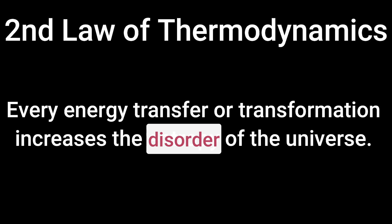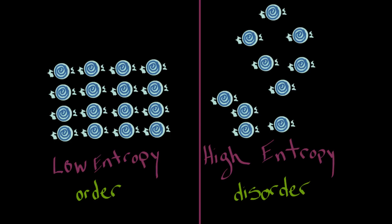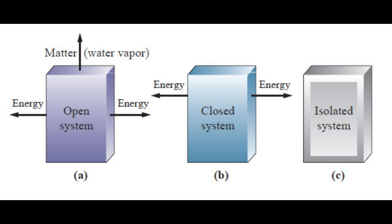Life and organisms need order so that we can carry out our metabolic processes and survive. We need it for growth, reproduction, and maintenance of our cells and bodies. We are open systems, not isolated, and require the flow of energy into us from the universe so that we can carry out our biological processes.